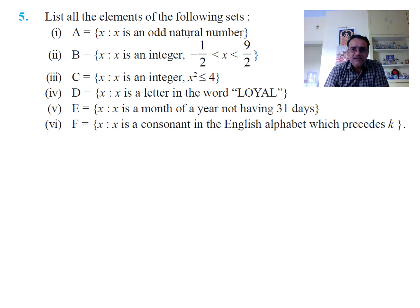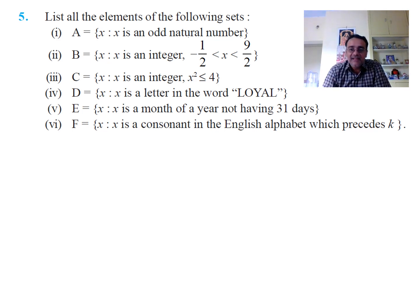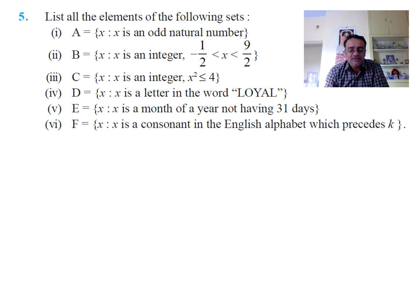The third bit is {x : x is an integer and x² ≤ 4}, giving -2, -1, 0, 1, 2. The fourth bit is {x : x is a letter in the word 'loyal'} — there are four distinct letters: L, O, Y, A. The fifth bit is {x : x is a month of the year not having 31 days} — identify months like February, April, and so on.